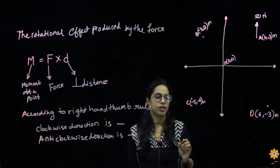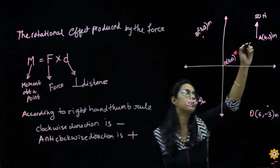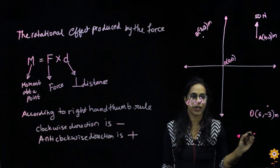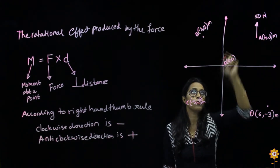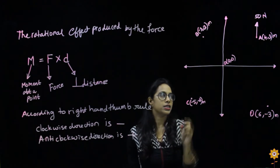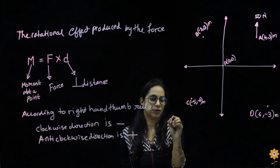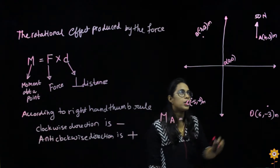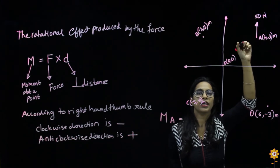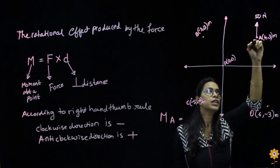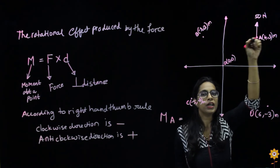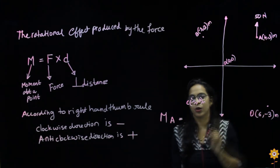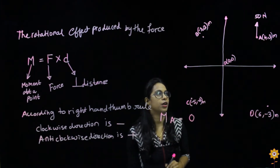Let us say we have a force of 50 newtons going upwards, and we have various different points about which we will find the moment of this 50 newton force. For point A: moment equals force into perpendicular distance. Since the force is applied at point A itself, there is no perpendicular distance from A — it is zero. Therefore, the moment about A is zero.